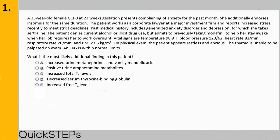What do we think about choice A — increased urine metanephrines and vanillylmandelic acid? With what condition does that correlate? Hopefully you're saying pheochromocytoma, which presents as episodic hypertension, tachycardia, and headache due to overproduction of norepinephrine and epinephrine. Does this woman have those symptoms? Hopefully you're saying no, so we can eliminate answer choice A. How about choice B — positive urine amphetamine metabolites? In real life it's possible she could be lying, but the NBME will not try to trick you like this.